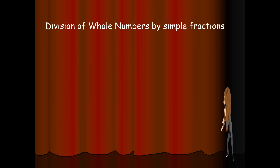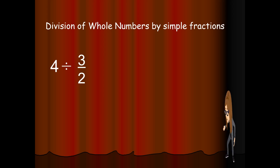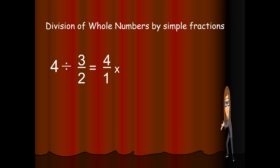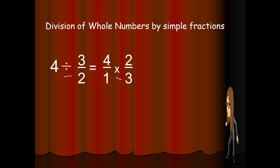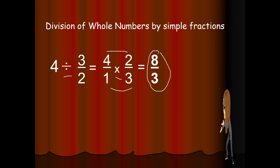Let's go to another example. We have 4 divided by 3 over 2. The rule: we rename the whole number by putting 1 as the denominator. So we have 4 over 1, then we change the sign of division to multiplication. We get the reciprocal of 3 over 2, which is 2 over 3. Then we multiply: 4 times 2 is 8, and 1 times 3 is 3. We need to simplify 8 over 3, and that is 2 and 2 thirds.